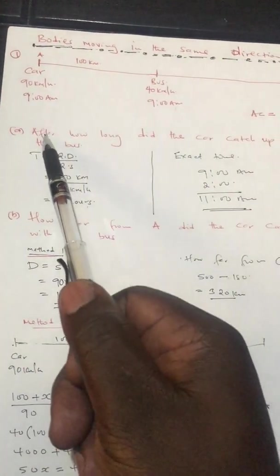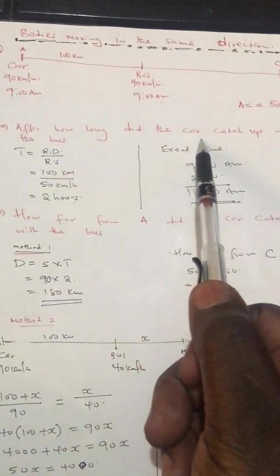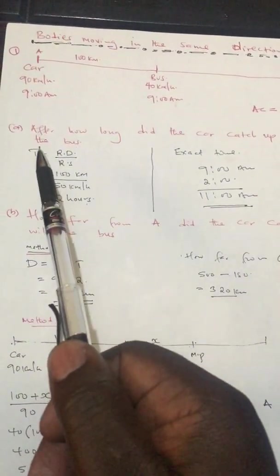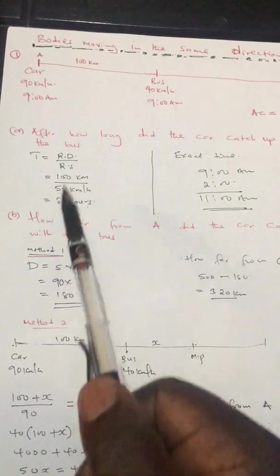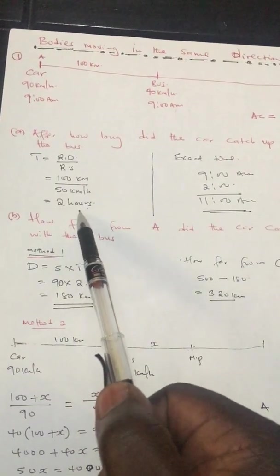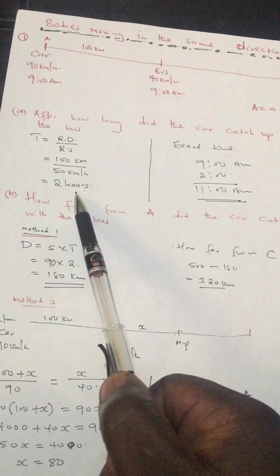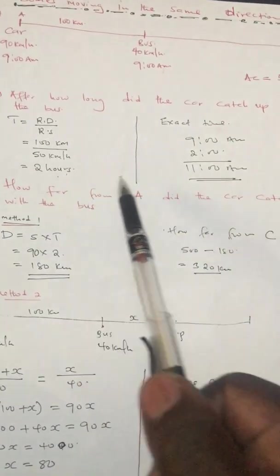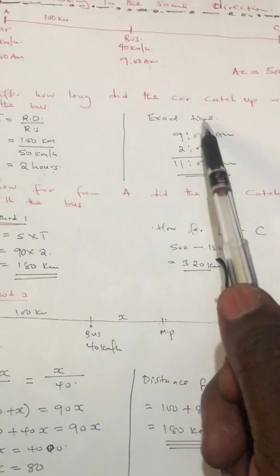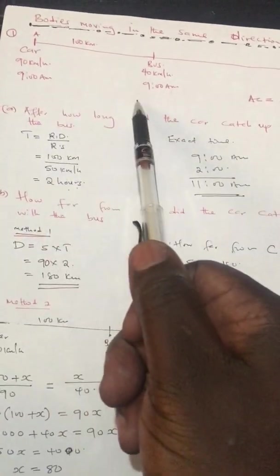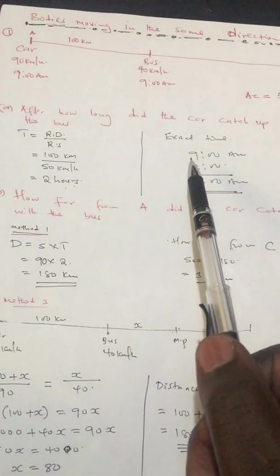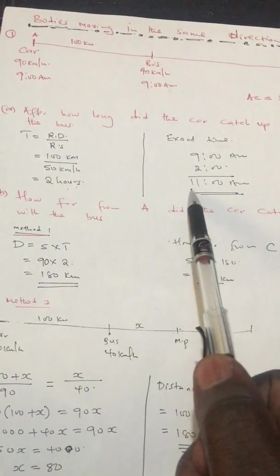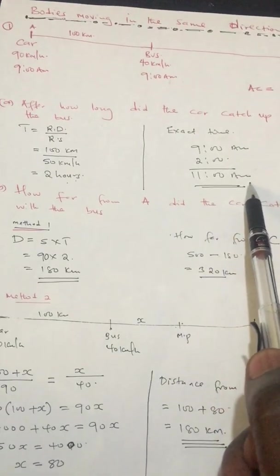When you divide this you get 2 hours. So if the question asks how long did the car take to catch up with the bus, the answer is 2 hours. If the question asks at what exact time, all calculations began at 9 a.m., so you add 9 plus 2 hours and the exact time is 11 a.m.